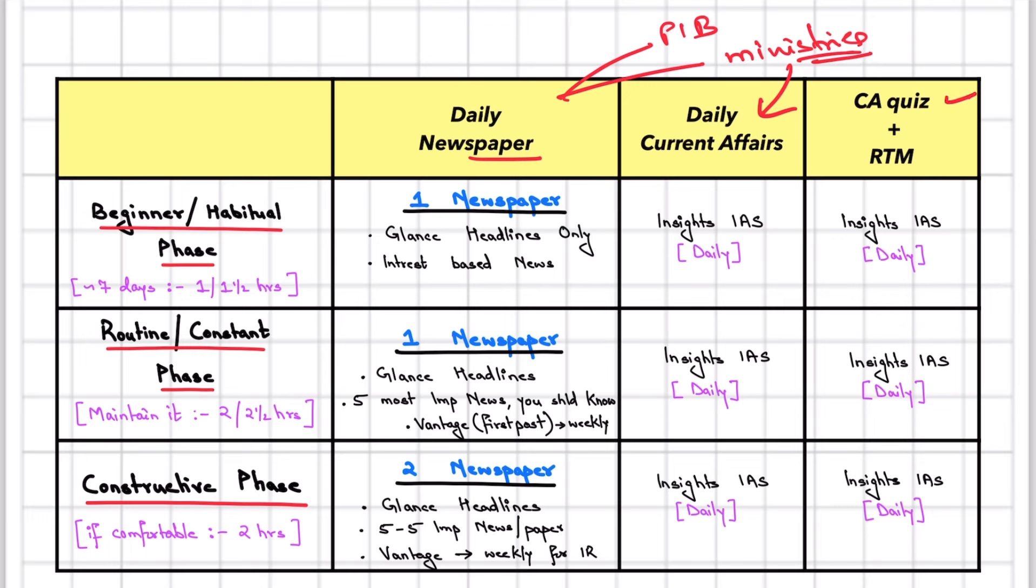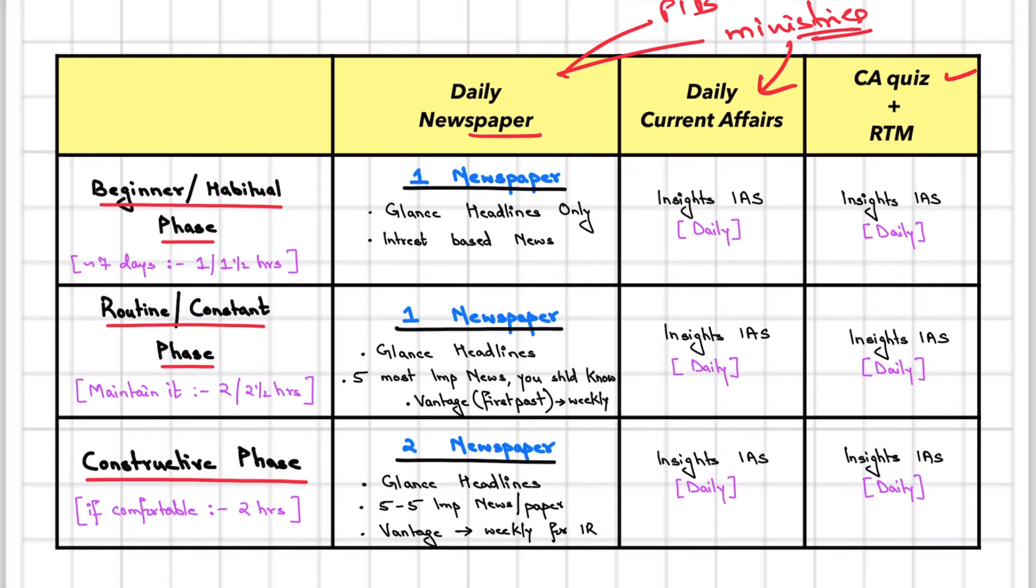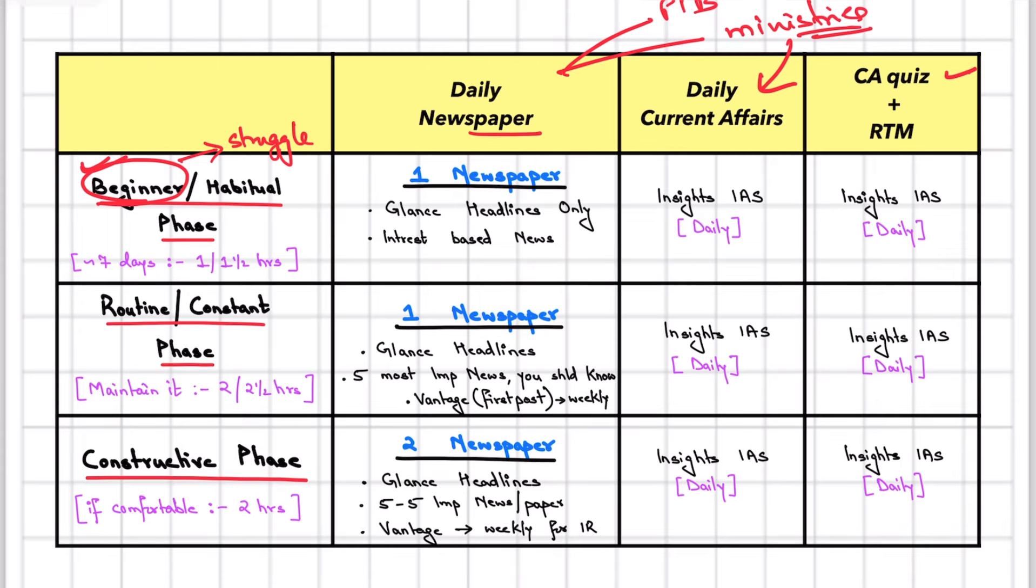I've divided this into three phases. First, let's talk about if you've never read newspapers before or you've tried but are struggling a lot - you're getting bored, you're just studying but don't understand anything. This phase will be very important - it's a seven-day phase that can vary individually, in which you have to give only one to one and a half hours. This is the beginner or habitual phase because we're trying to build a habit.